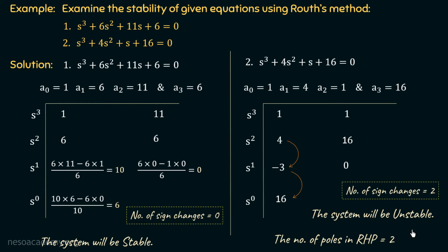In this lecture, we discussed the necessary conditions of stability, the method of forming the Routh array, and the Routh stability criteria. In example 1, the number of sign changes in the first column was 0, so the system is stable. In example 2, the number of sign changes was 2, so the system is unstable with two poles in the right half plane. In the next lecture, we will discuss more examples and the special cases of RH criteria.